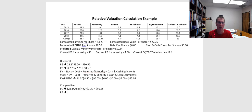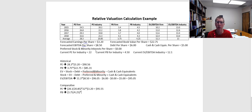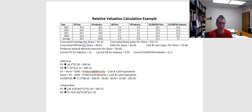Now we do the same thing for price-to-book. Our price-to-book multiple has been 3.75 as a historical average. The industry has been 4.25, so we've traded at a slight discount relative to the industry on a price-to-book basis — we want to capture that discount. We then multiply by the current industry price-to-book of 4.5, and then multiply by our forecasted book value per share of $22.75. That gives us a value of $90.33.